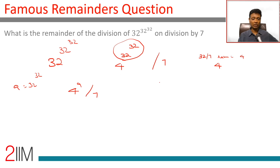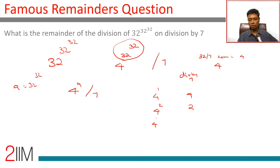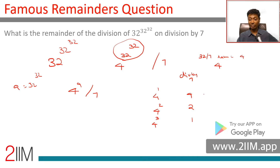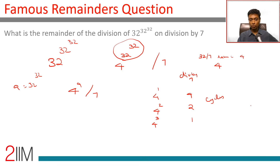Let's think about 4 power a. 4 power 1 on division by 7 leaves a remainder of 4. 4 squared is 16, which leaves a remainder of 2. 4 cubed is 2 into 4 = 8, which leaves a remainder of 1. So the cycle is 4, 2, 1 — repeating: 4, 2, 1, 4, 2, 1. That's how 4 power something behaves on division by 7.